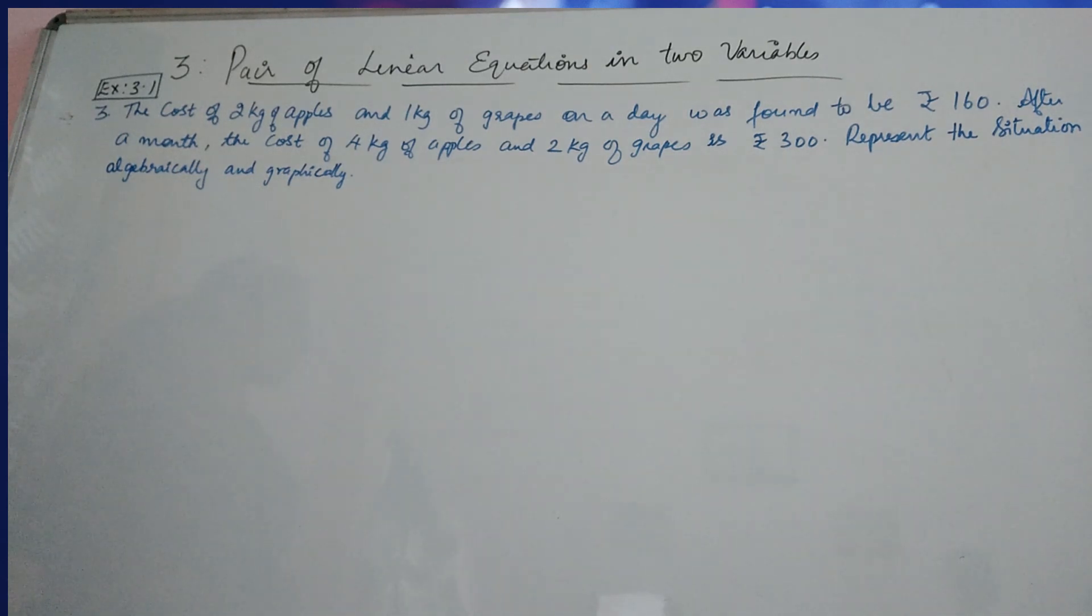Next is question number 3 of exercise 3.1. The cost of 2 kg of apples and 1 kg of grapes on a day was found to be Rs. 160. After a month, the cost of 4 kg of apples and 2 kg of grapes is Rs. 300. Represent the situation algebraically and graphically.